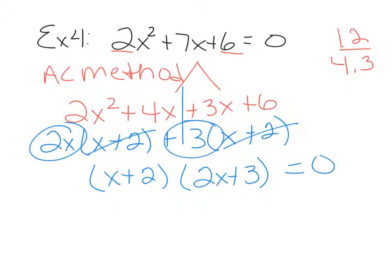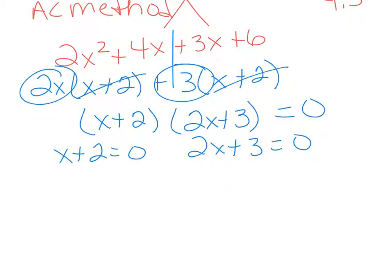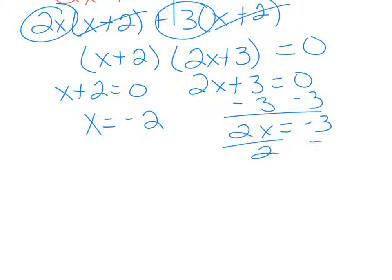After factoring out x plus 2, I'm left with 2x plus 3. I bring down my equals 0. Setting each factor equal to 0: x plus 2 equals 0 gives x equals negative 2. For 2x plus 3 equals 0, subtract 3 to get 2x equals negative 3, then divide by 2, giving x equals negative 3 over 2.